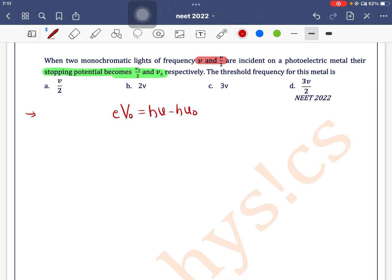In the first case, it is given that when light of frequency nu is incident, we have a stopping potential as Vs by 2. Let's say this is equation number 1.